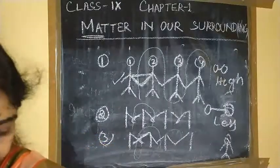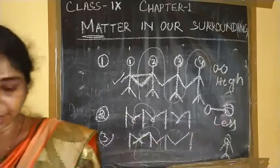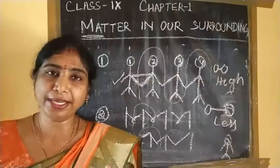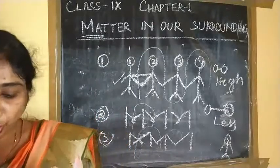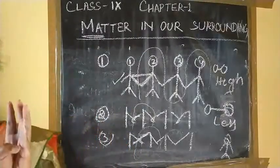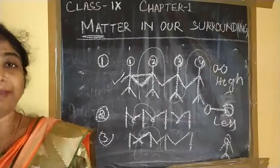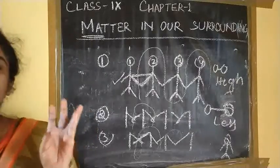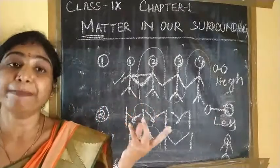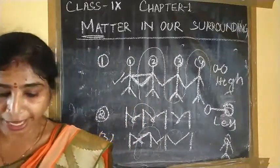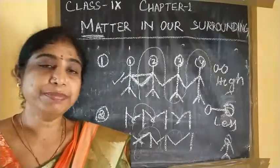The next question is: what are the characteristics of particles of matter? This is already discussed, but I am telling you again. First, the particles have spaces between them. Next, particles are in constant motion. And last, all the particles of matter have kinetic energy and a force of attraction between them.